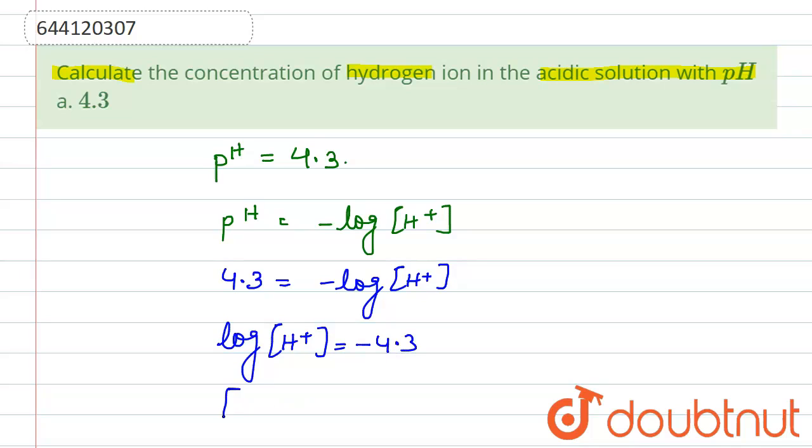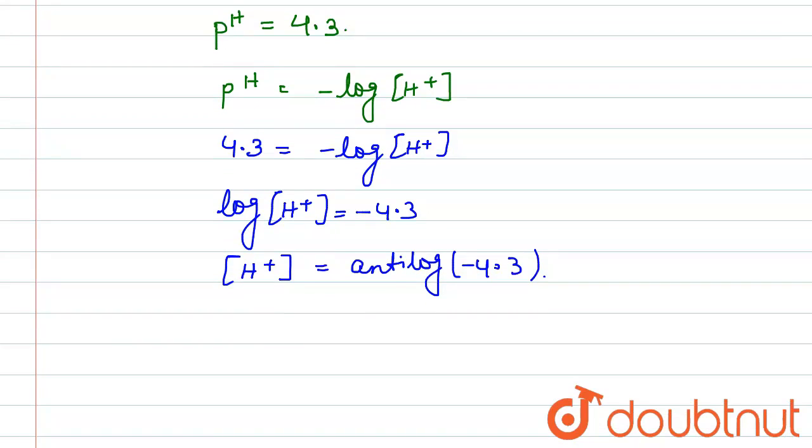Right, and from here we can write the concentration of H+. This should be equal to antilog of minus of 4.3. Right, so if you solve this antilog, so from here the value that comes.